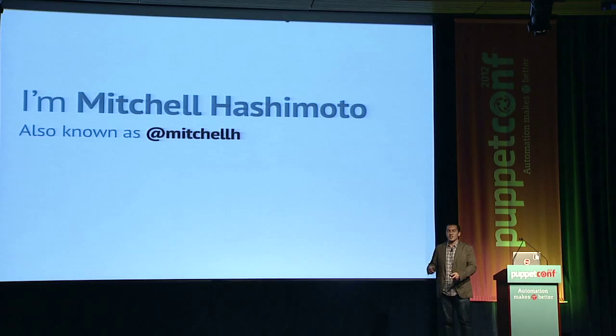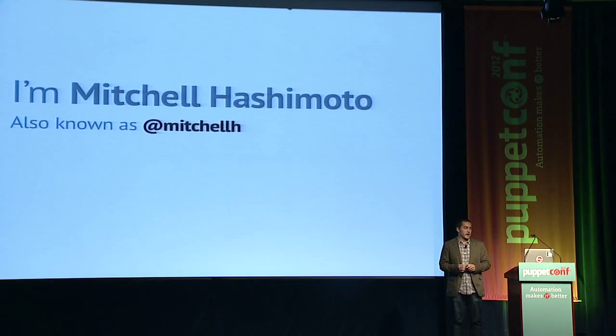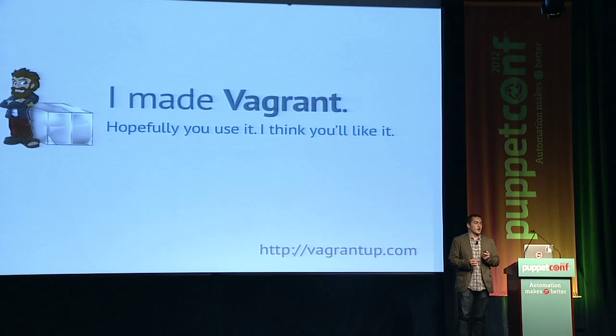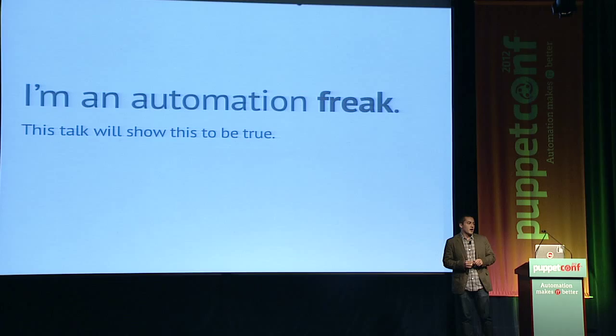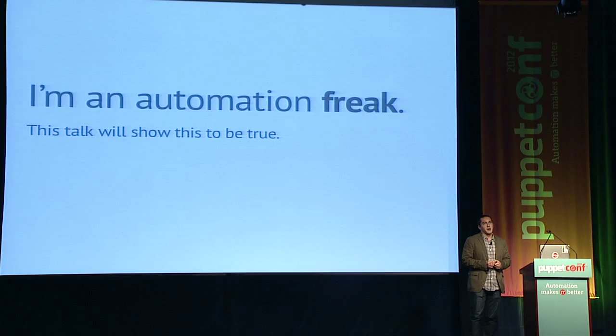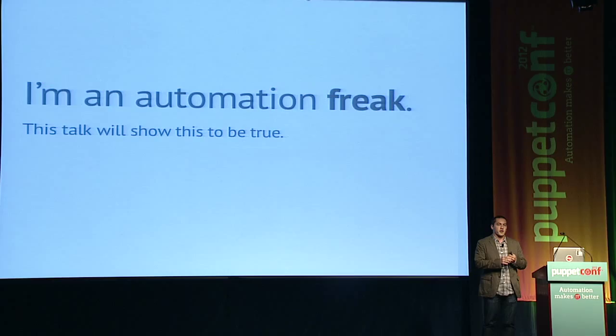He already intro'd me — I'm Mitchell Hashimoto. This just has my Twitter handle on it if you want to tweet me any questions for later. I made Vagrant, and hopefully you use it. If you don't, I think you'll like it. I can be described as an automation freak. I really love to take anything dealing with computers that humans do and see if I can automate it away. Also, I have hundreds of Vagrant stickers — if you want one for your laptop or for your coworkers, just catch me after the talk and I'll hand them out for free.